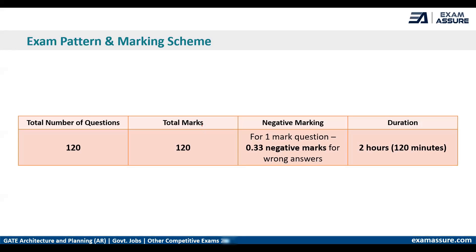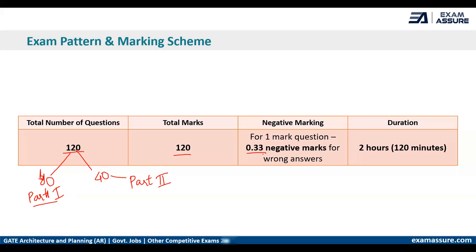Regarding the exam pattern and marking scheme: the total number of questions is 120 — 80 questions for Part 1 (architecture) and 40 questions for Part 2 (reasoning and aptitude). Each question carries one mark with a negative marking of 0.33 for every wrong answer. The total time is two hours, that is 120 minutes, giving you approximately one minute per question.